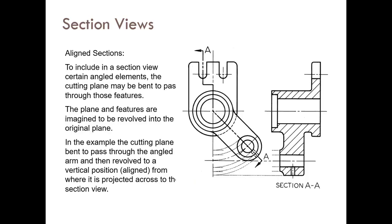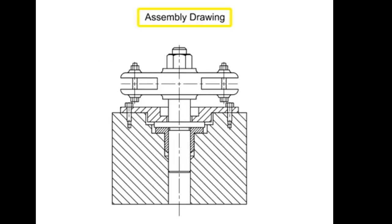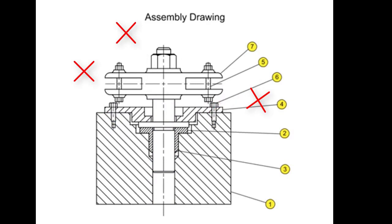For aligned sections, when a part has aligned features, the section view must be made aligned correctly. The right side shows true projection; the left side shows the conventional appearance. For assembly drawings, section views show different components — bolts, screws, and pins do not receive section lines, but other components do. Flip the section line direction between 45 degrees and 135 degrees to indicate to other engineers that there are multiple separate parts.